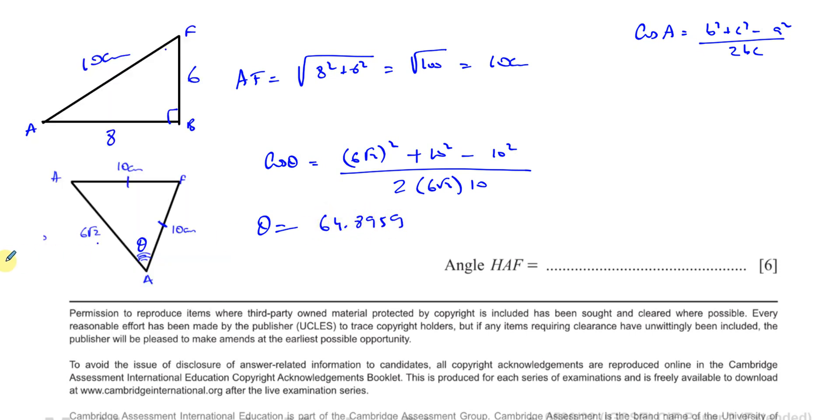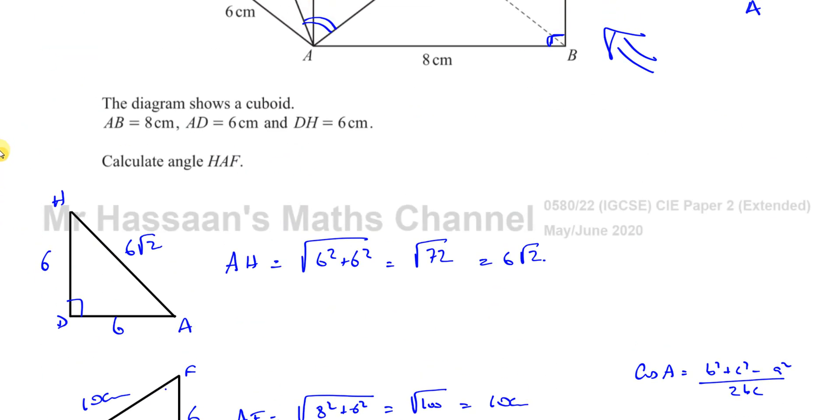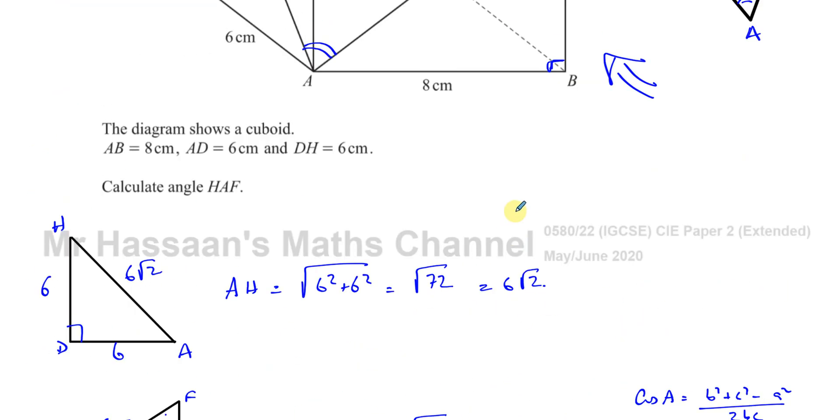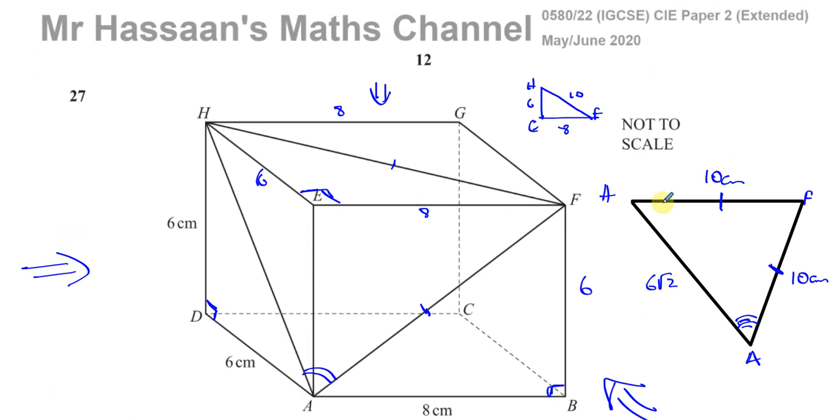Now we're supposed to round this if it's not mentioned or not given to one decimal place. So that's 64.9 degrees. And there's the answer to question number 27, which is the last question on this paper.